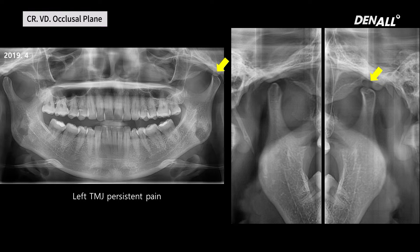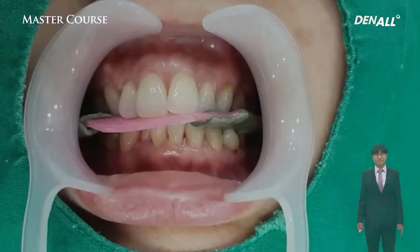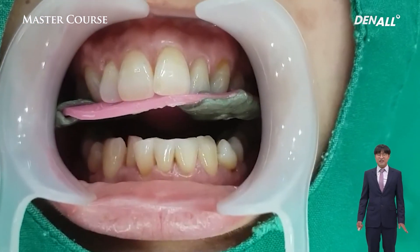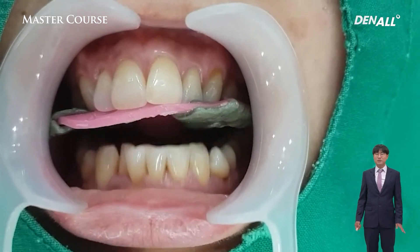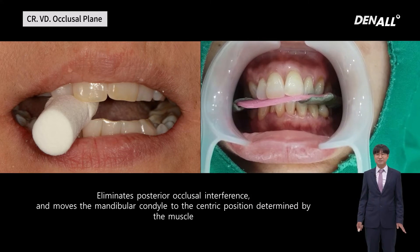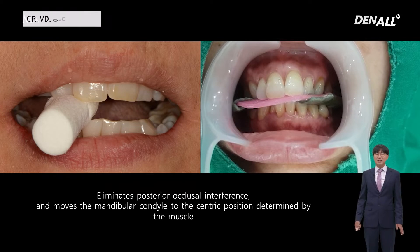Let's have a look at my case. The patient had persistent pain in the left TMJ for about 5 years and could hear a sand grinding sound. Even though the patient visited many hospitals, it didn't improve. When I obtain CR, to perform muscle deprogramming, I make the patient bite on a cotton ball for 10 to 20 minutes. Depending on the presence of upper anterior teeth, various methods can be used to obtain CR.